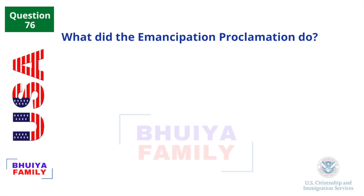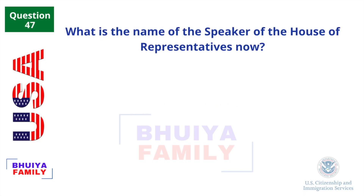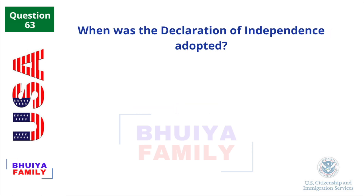What did the Emancipation Proclamation do? Freed the slaves. What is the name of the Speaker of the House of Representatives now? Kevin McCarthy. When was the Declaration of Independence adopted? July 4, 1776.